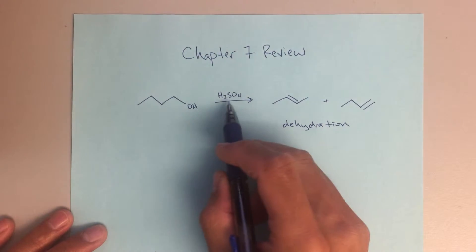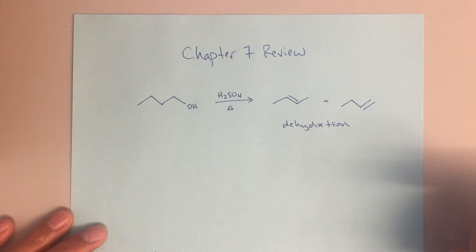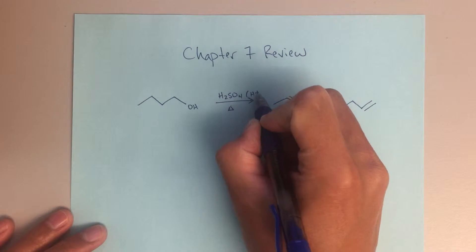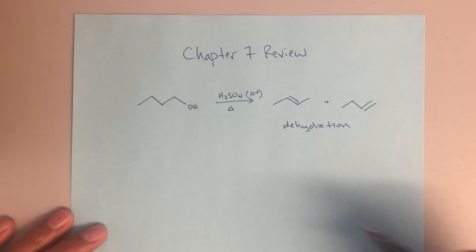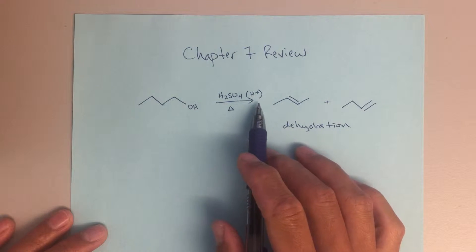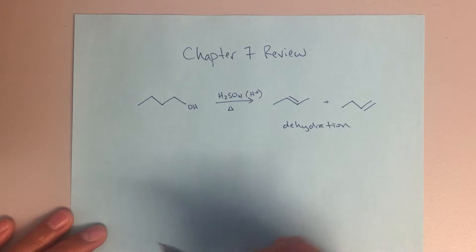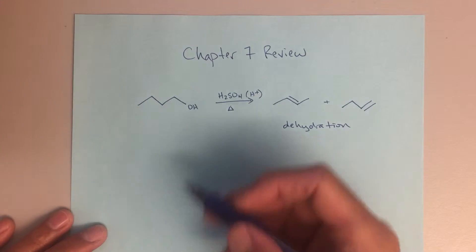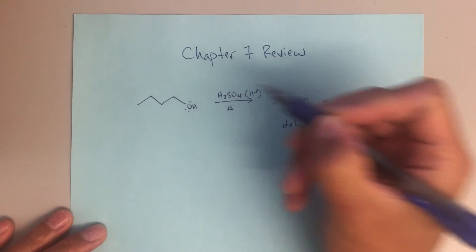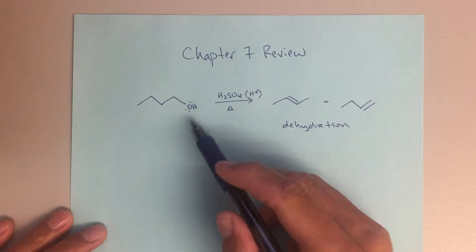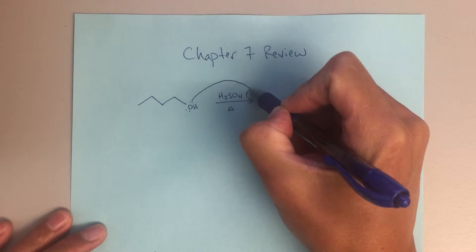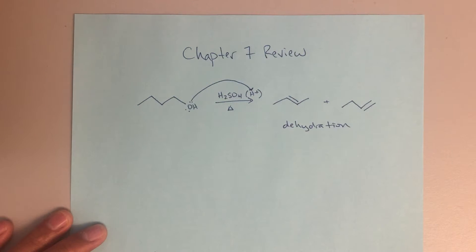If I see H2SO4, that's a strong acid, we should immediately be thinking H+, that's a source of H+, really what's going to be doing the business here is this H+, and this little triangle that just indicates heat, we're going to be applying some heat. So the first step, if I see H+, and I see this OH group, the first step is always going to be something like this, I'm always going to be protonating that alcohol.